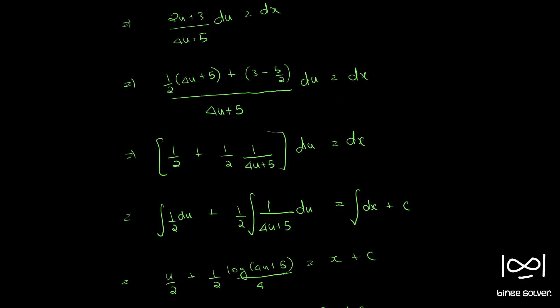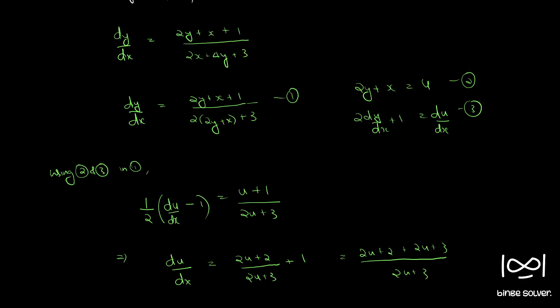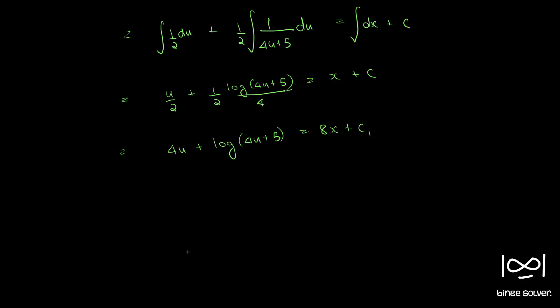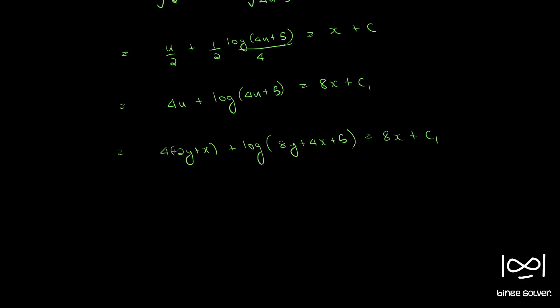Now from equation 2, we know u equal to 2y plus x. So we apply this: 4 into 2y plus x plus log 4 into 2y plus x gives 8y plus 4x plus 5 equal to 8x plus c1.